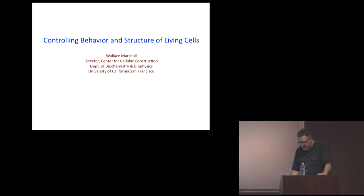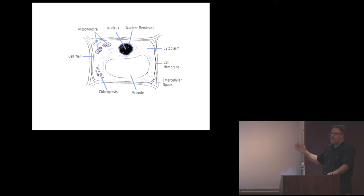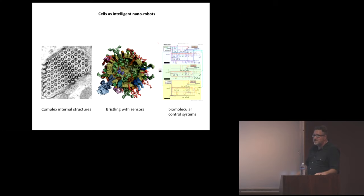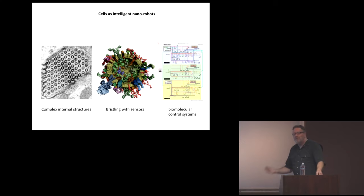I want to talk about our efforts to get some control over the structure of living cells. When you're a kid and learn about what a cell is, they typically teach you it's a more or less amorphous blob with water and enzymes doing biochemistry. I would argue that cells are much more machine-like than we give them credit. At higher resolution, cells have very complex, really mechanical-looking components. The surface of cells is typically covered with different kinds of sensors and actuators, and there are interesting pathways where molecules talk to each other, doing some kind of computation.